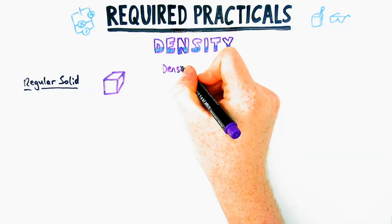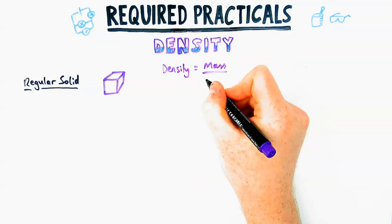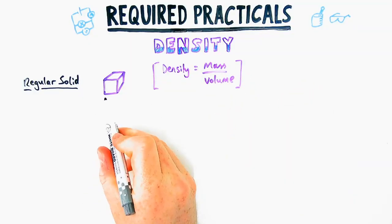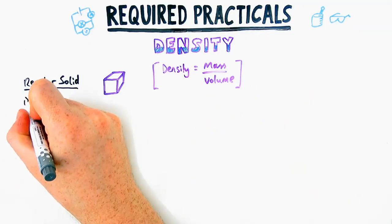Density is the mass divided by the volume, so all we need to do for this practical is measure those two things practically and then we've got an answer for our density. So let's look at a regular solid first.